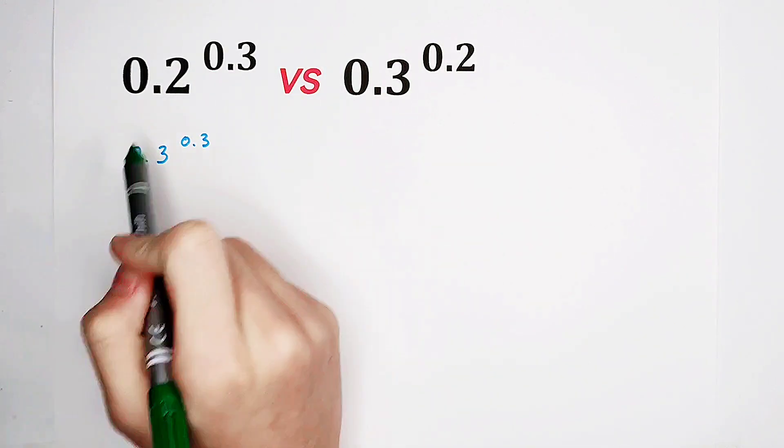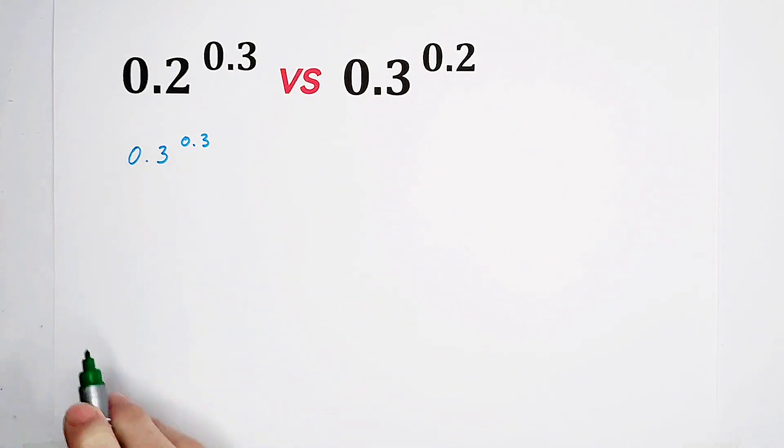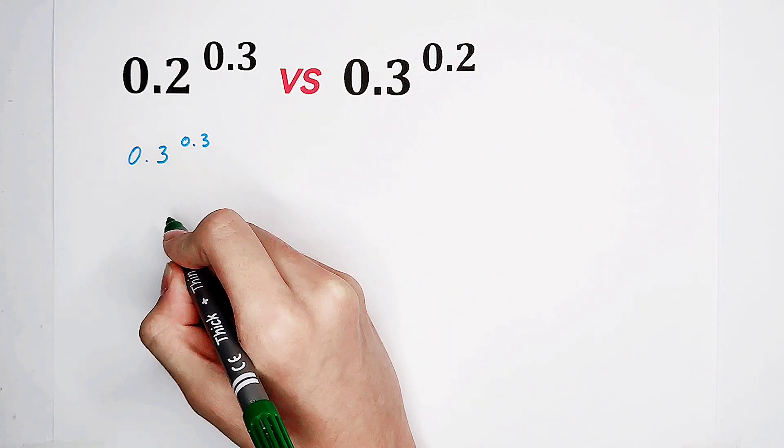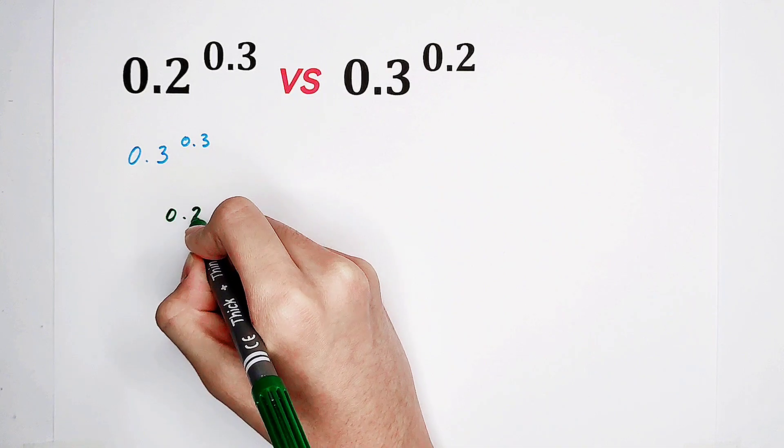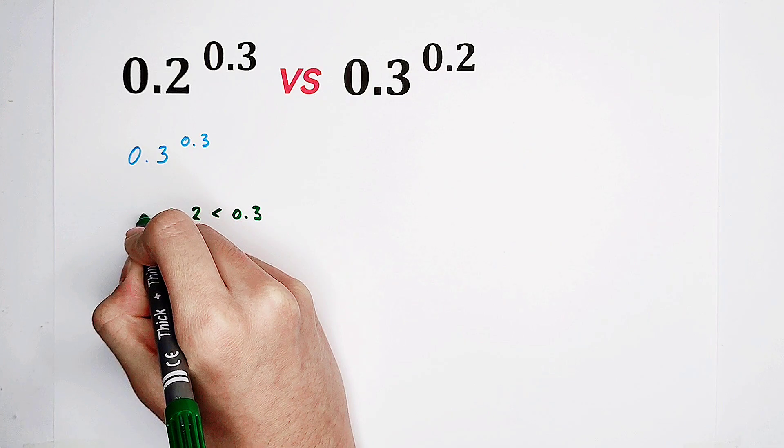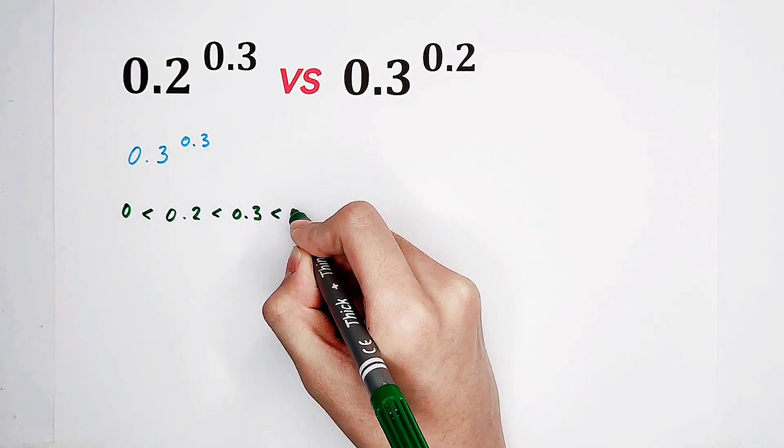Now, compare 0.2 to the power of 0.3 with 0.3 to the power of 0.3. Because we know, 0.2 is of course smaller than 0.3, and they are both between 0 and 1.